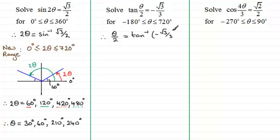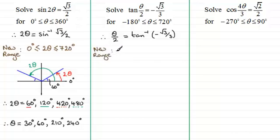So we're looking at a negative value for tan. We'll come to the quadrants in a moment, but first of all let's change the range to theta over 2. We've got to divide each one of these values by 2 to get our new range. Dividing theta by 2 gives theta over 2, or half theta. Dividing minus 180 by 2 gives minus 90 degrees, and dividing 720 by 2 gives 360 degrees.